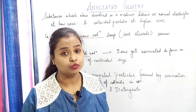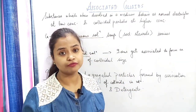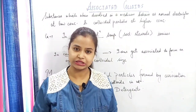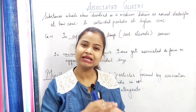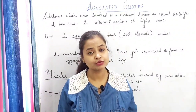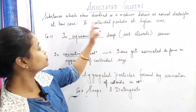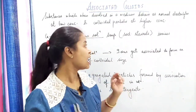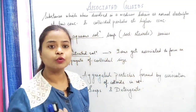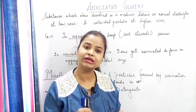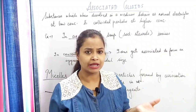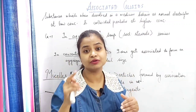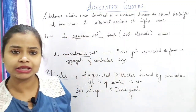Hello students, welcome back. In our previous video we studied the different types of colloids and classification of colloids, and the differences between macromolecular, micro-molecular, and associated colloids. Now in this video we are going to study in detail about associated colloids. These are substances which, when dissolved in a medium, behave as normal electrolytes at low concentration and as colloidal particles at higher concentration.